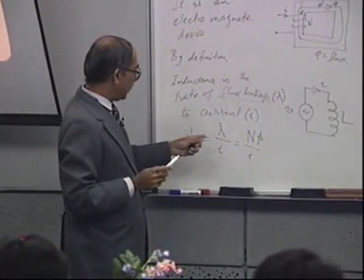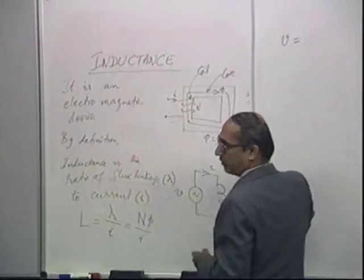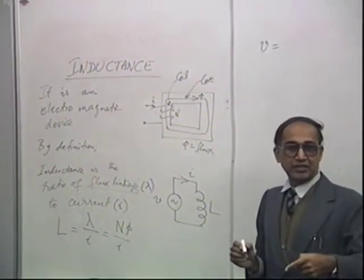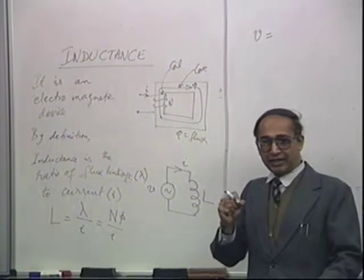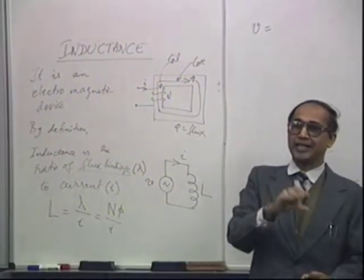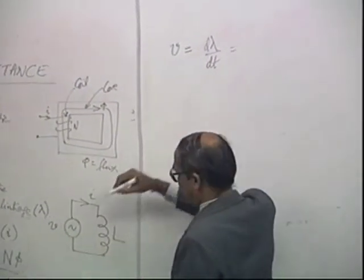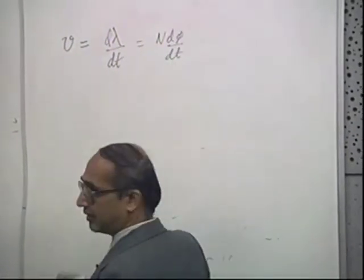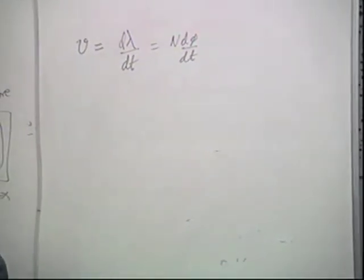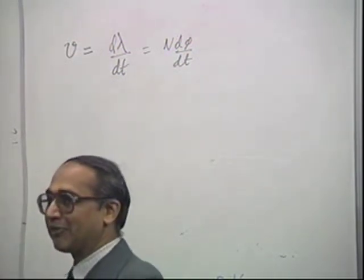If this is the flux linkage, the voltage across the coil is given by Faraday's law — the change of flux linkage with time equals the voltage: V = dλ/dt = N·dφ/dt. Faraday found that whenever the flux linkage in a coil changes, a voltage appears across it. And since λ = L·i, we have V = L·di/dt.